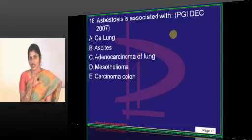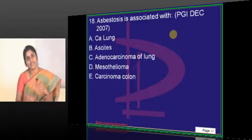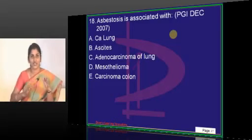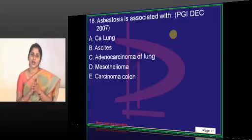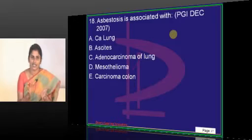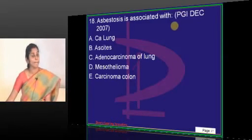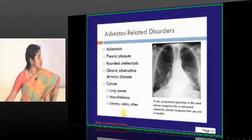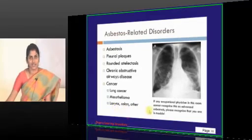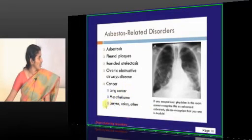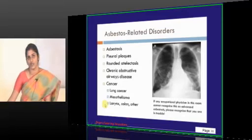These were the associations of asbestosis at least a decade ago. In the past seven to eight years things have changed. Asbestosis doesn't stop its harmful effects only with lungs - it has got some other effects too. It is now associated with CA larynx and CA colon. This is gaining more importance nowadays.